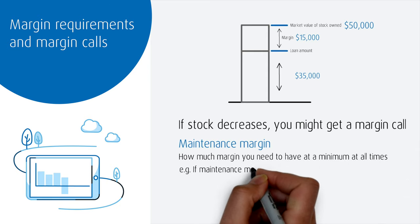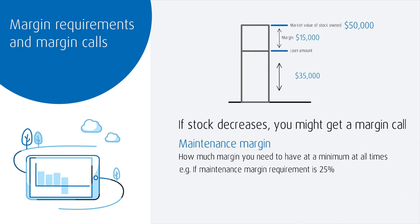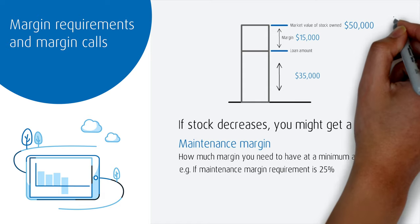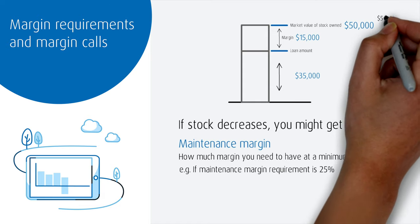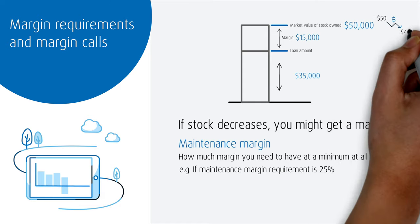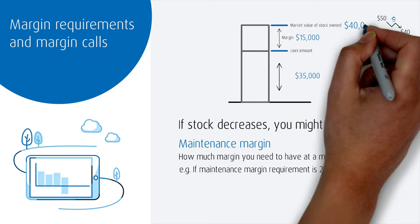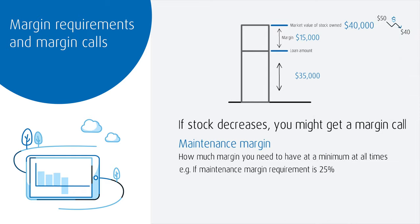If the maintenance margin requirement is 25%, then if stock XYZ falls in price from $50 to $40, the total position value has also fallen from $50,000 to $40,000.